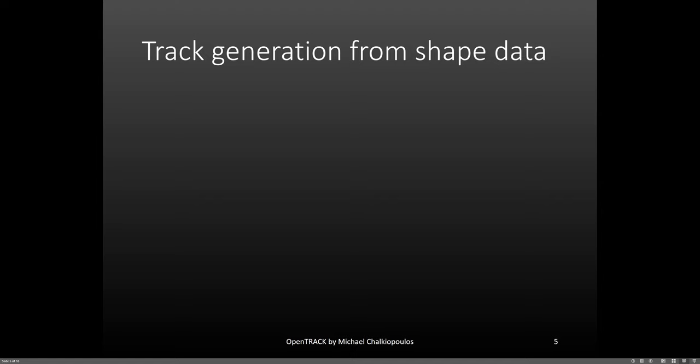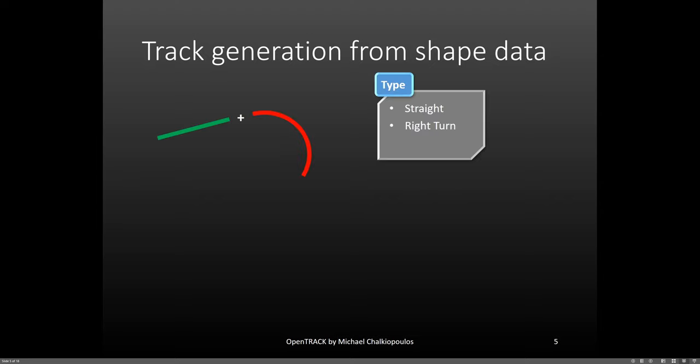We will talk about the generation from shape data first. Think of the track as being a puzzle that you can create by fitting a bunch of different pieces together. First, you specify the type of the segment or section. You can use straights, right turns, and left turns.